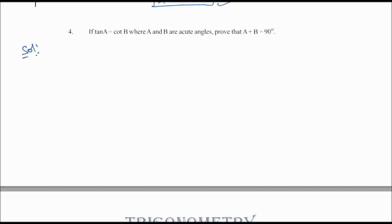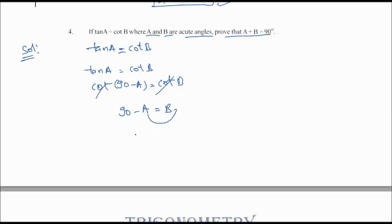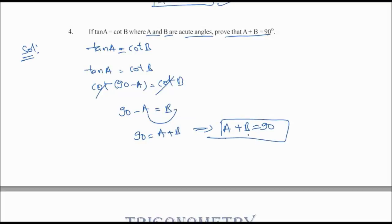Fourth problem: given tan a = cot b, where a and b are acute angles, prove that a + b = 90°. We write tan a as cot(90° - a). So cot(90° - a) = cot b, which gives 90° - a = b. Therefore a + b = 90°, which is what we had to prove.